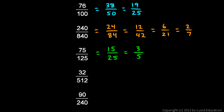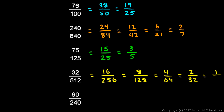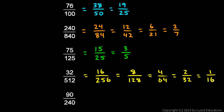32 over 512. Both are divisible by 2, so we keep dividing by 2 repeatedly: 32 ÷ 2 = 16, 512 ÷ 2 = 256; then 16 ÷ 2 = 8, 256 ÷ 2 = 128; then 8 ÷ 2 = 4, 128 ÷ 2 = 64; then 4 ÷ 2 = 2, 64 ÷ 2 = 32; then 2 ÷ 2 = 1, 32 ÷ 2 = 16. So 1/16 is the answer.